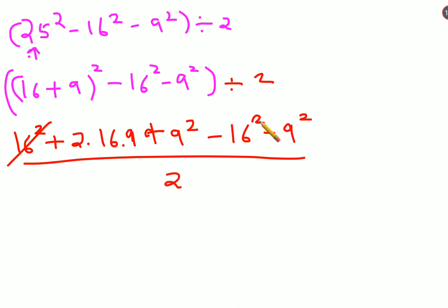So now what we can do is see this and this gets cancelled. This and this gets cancelled. So we are left with 2·16·9 ÷ 2. This and this also gets cancelled. All I am left with is 16·9.